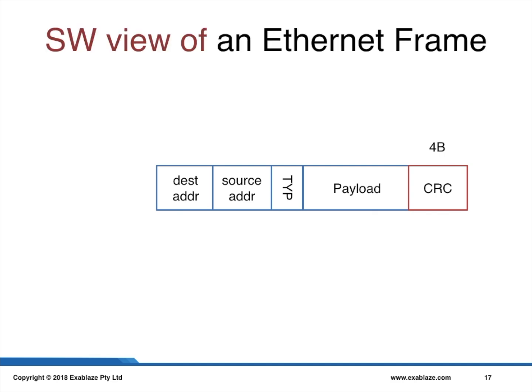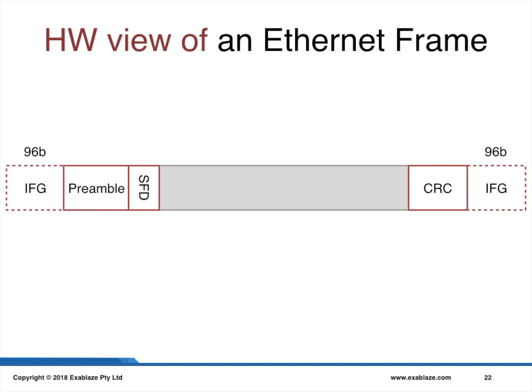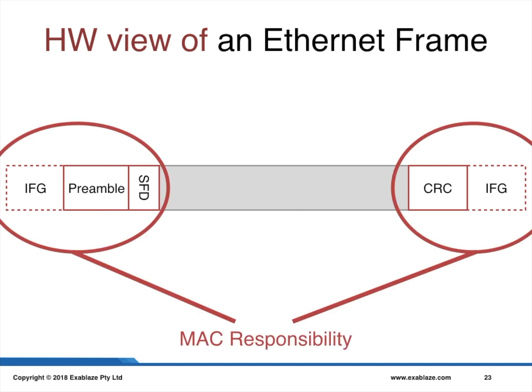This is a very software-centric view of what an Ethernet frame does. So we're going to dig in a little bit deeper, ignoring most of the software aspects, to understand what the hardware view of an Ethernet frame is. From the hardware view, there is a little bit more to it. There is a start-of-frame delimiter, a preamble, and encapsulating each frame is an inter-frame gap. These components are the key responsibilities of an Ethernet MAC.